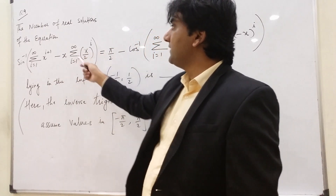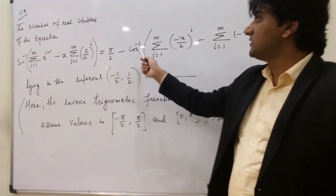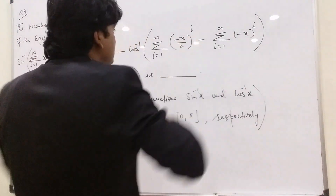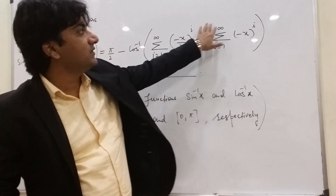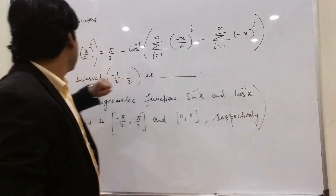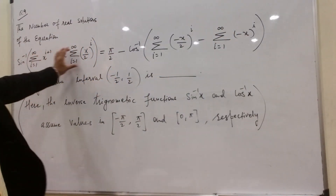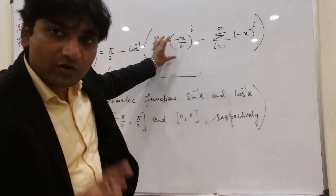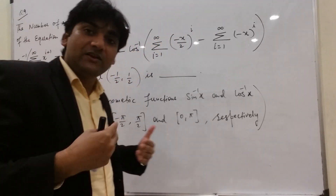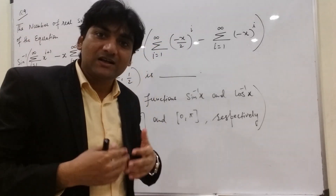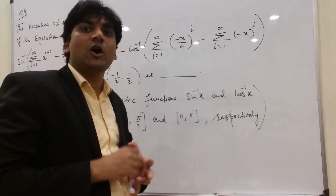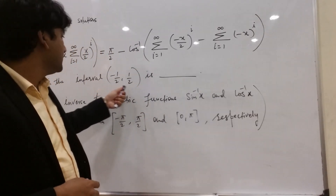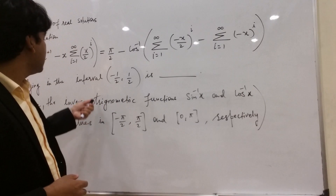Then minus x, then again summation of (x/2) raised to i with i equals 1 to infinity, equals π/2 minus cos inverse — again summation with i equals 1 to infinity of (−x/2) raised to i, minus summation of (−x) raised to i. This big equation is given to us, and we have to solve for x. They are asking how many solutions exist in the interval minus half to half.